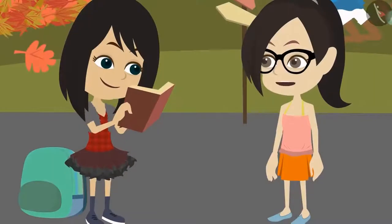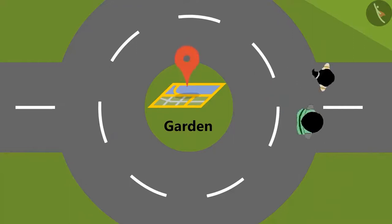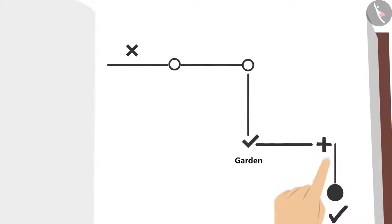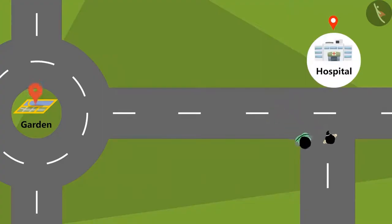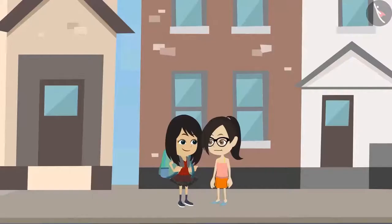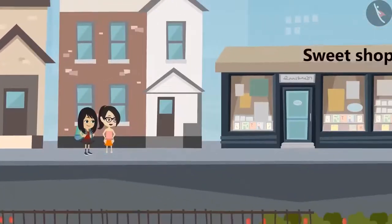Yes, now I got it. Let's go. Look, there is a hospital. According to this drawing, we should take a right turn. See, the sweet shop is there. Madam's house must be in front of the shop. Look, Madam is standing there.